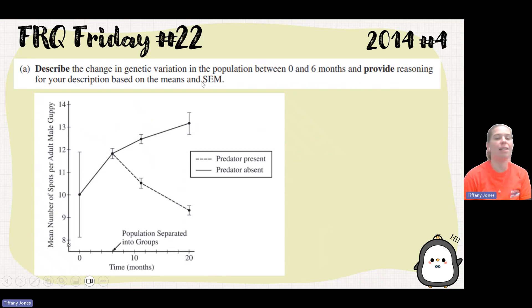So the first question asks us, describe the change in genetic variation in the population between zero and six months, and provide reasoning for your description based on the means and SEM. So if we look here, we've got our error bars. We can see that it goes from 10 mean spots to 12 mean spots, so we have an increase in our number of spots. But that's not what the question is asking us. The question is asking us about the change in genetic variation.